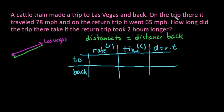So with this, it tells us that on the trip there, it traveled 78 miles per hour. So to Las Vegas, we went at 78 miles per hour. And then going back, we traveled at 65 miles per hour. So we have our two rates.